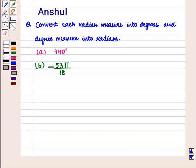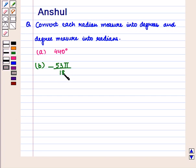Hello and welcome to the session. In this session we are going to discuss the following question: Convert each radian measure into degrees and degree measure into radians. Part A is 440 degrees and Part B is minus 53π/18.